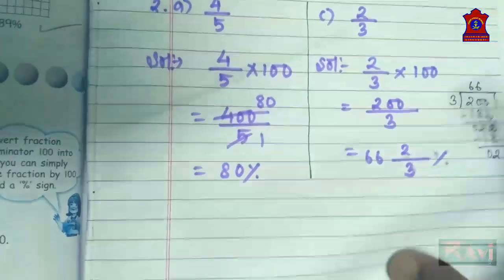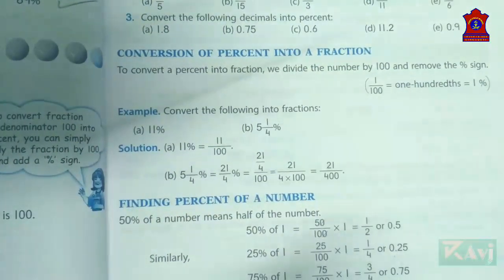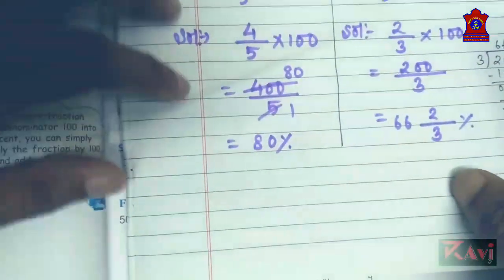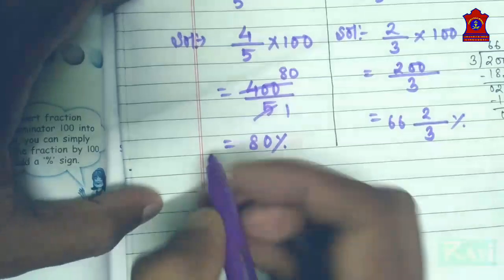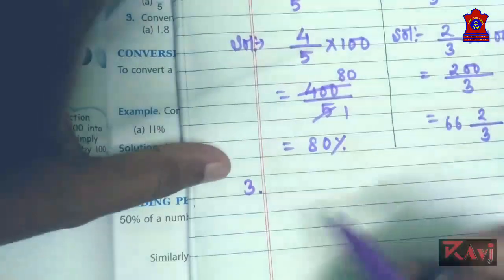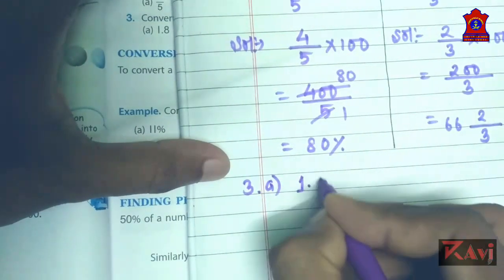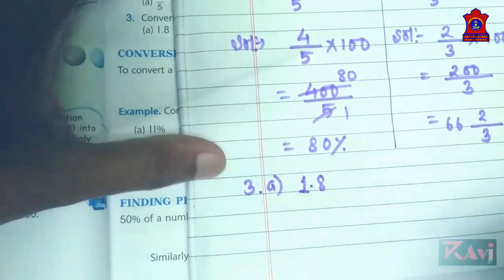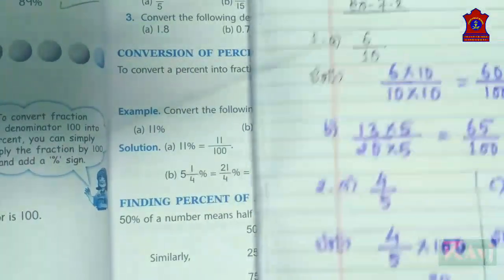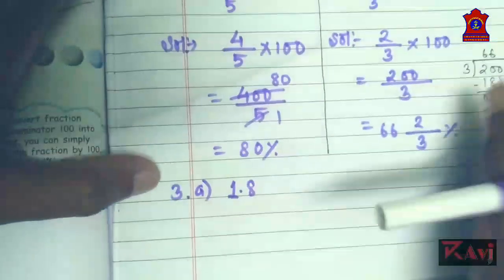Now look at question number three: convert the following decimals into percent. The decimal is already given. Let me write question: 1.8. You need to convert 1.8 into percent.